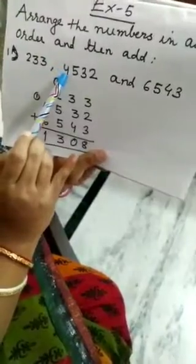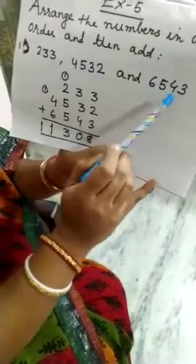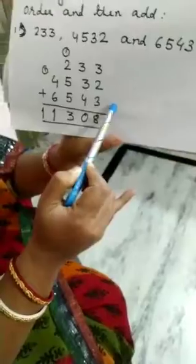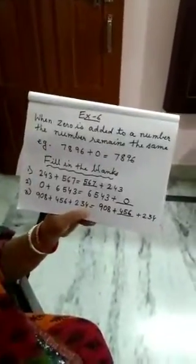Next, 4532. And this 6543. We will arrange in columns. See, now we add 3 plus 2 plus 3, 8. 3 plus 3 plus 4, 9. 3, 6 plus 4, 10. Carry 1. 5 plus 5, 10. Plus 2, 12. 12 plus 1, 13. Carry 1. 4 plus 6, 10. 10 plus 1, 11. Move to exercise 6.